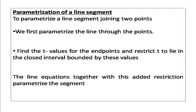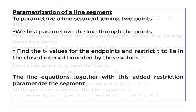Next is the parametrization of a line segment. To find the parametrization of the line segment joining two points, we first parametrize the line through the points, then find the t values for the endpoints and restrict t to lie in the closed interval bounded by these values. The line equations together with this added restriction parametrize the line segment.